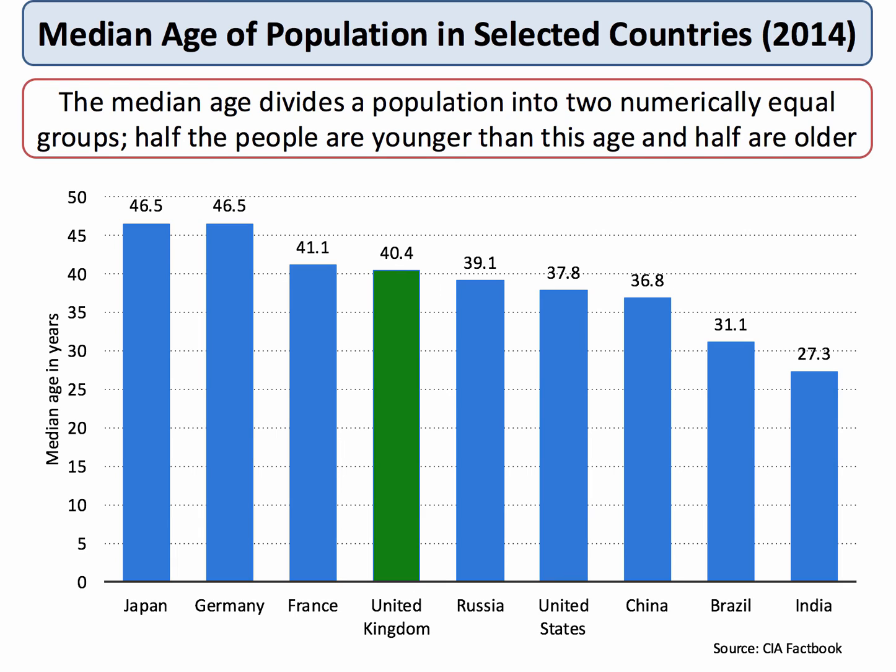Will an ageing population, in theory and in practice, be a barrier to aggregate supply potential in the years ahead?